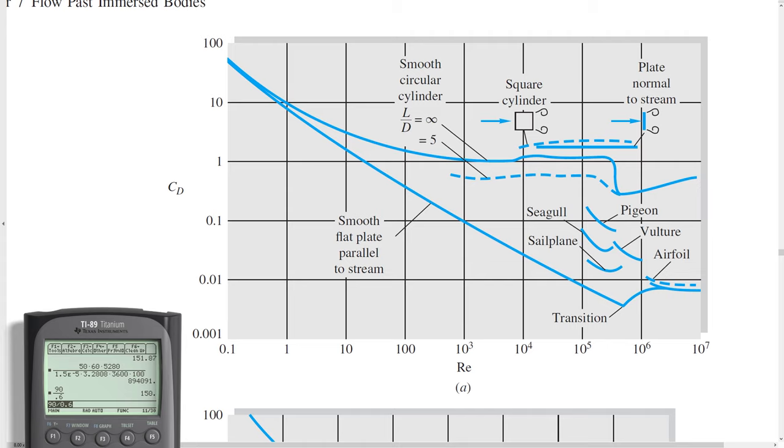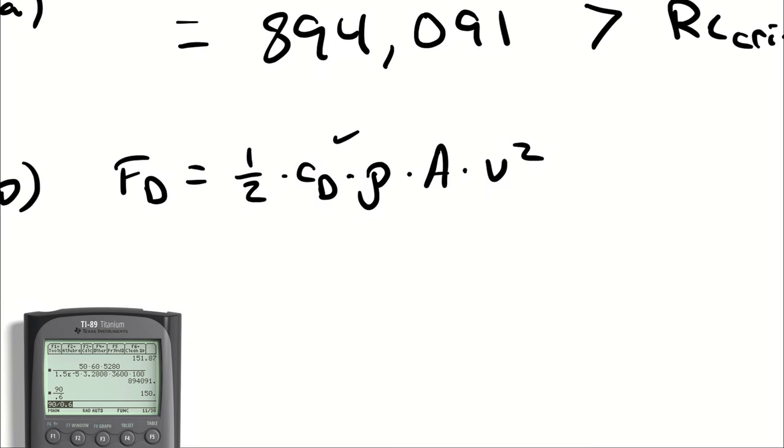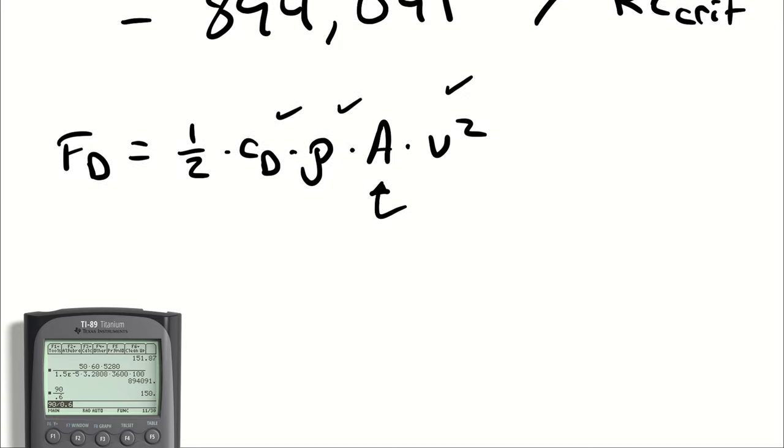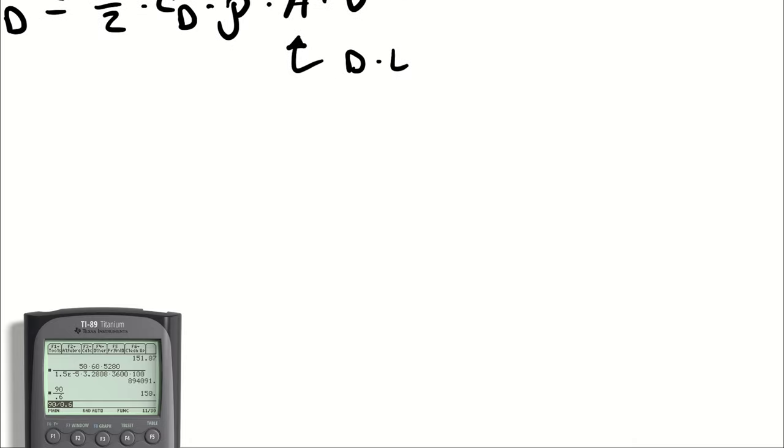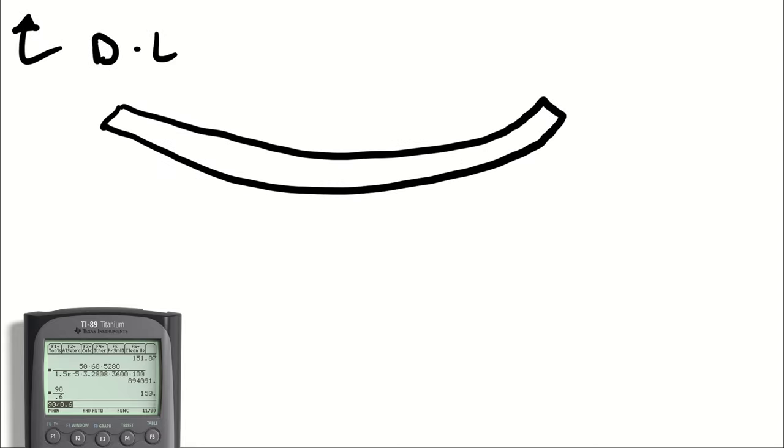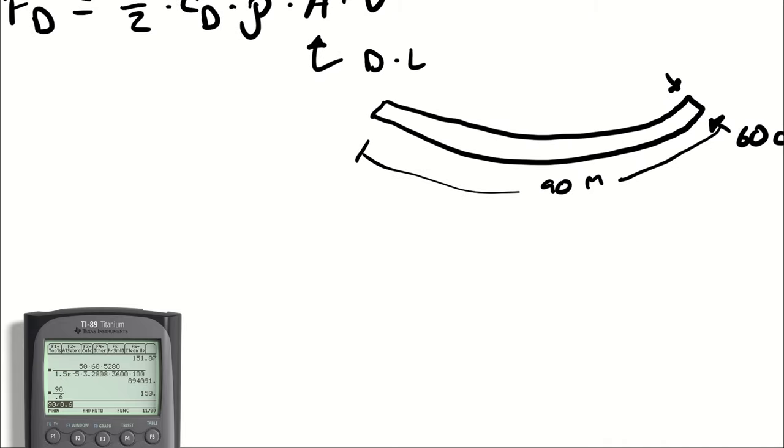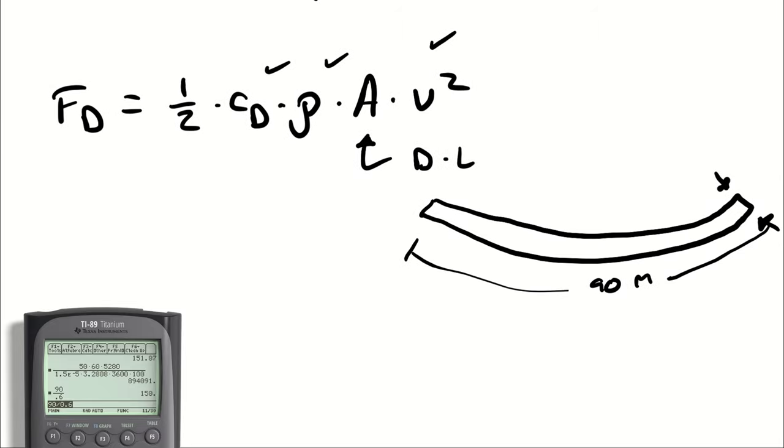With that number of 0.2, I have the coefficient of drag. I looked up the density of air. We know the velocity is 50 miles per hour. The area we're going to use is the diameter times the length, because we're looking at the approximately rectangular shape. It's a beautiful rectangle. I know what you're thinking. And that is 60 centimeters tall and 90 meters long. So we're using 60 centimeters times 90 meters for the effective area for drag.